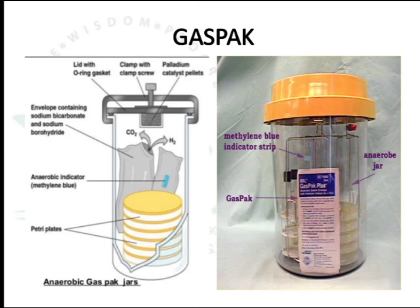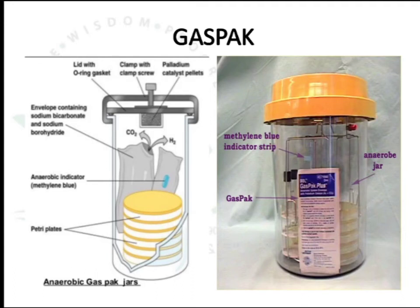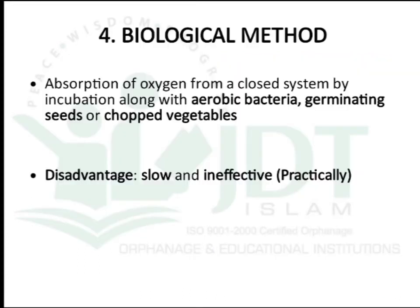This picture represents the gas pack: the envelope containing sodium bicarbonate and sodium borohydride, to which water is added, placed inside an anaerobic jar along with the petri plate inoculated with anaerobic microorganisms, with the screw tightened to produce anaerobiosis. The fourth overall method is the biological method, in which absorption of oxygen from a closed system is achieved by incubation along with aerobic bacteria or by using germinating seeds or chopped vegetables. However, this method is slow and ineffective and practically will not produce complete anaerobiosis.